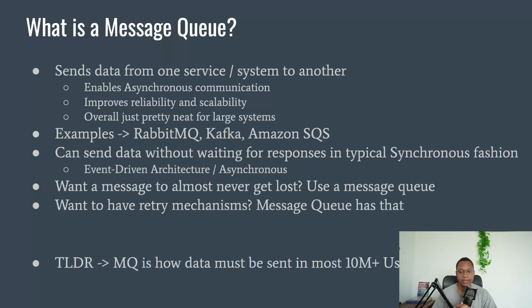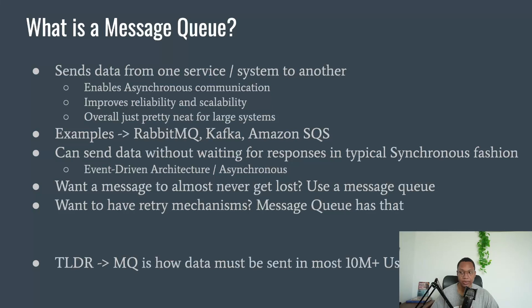You can send data without waiting for responses in a typical synchronous fashion. Event-driven architecture is kind of another word for this, where things are driven by events. If you want to send a message and you want it to never get lost, a message queue is a great job for that. If you want to have retry mechanisms, use a message queue. A message queue is how data must be sent in most 10 million-plus user applications - it's a requirement because you don't want data lost. If you're sending a Facebook message, you're going to be using some kind of message queue.